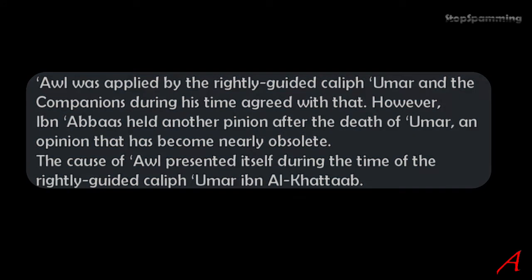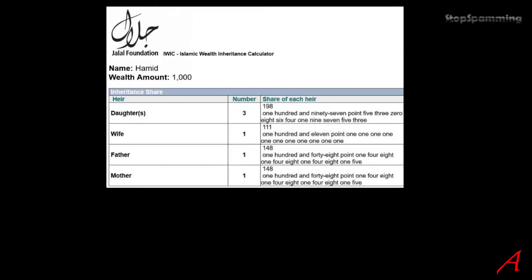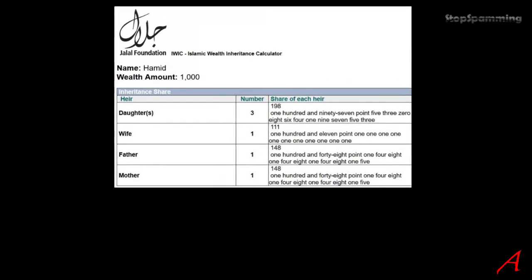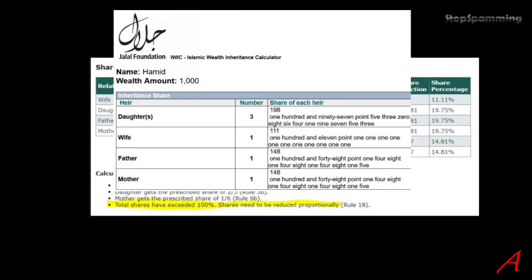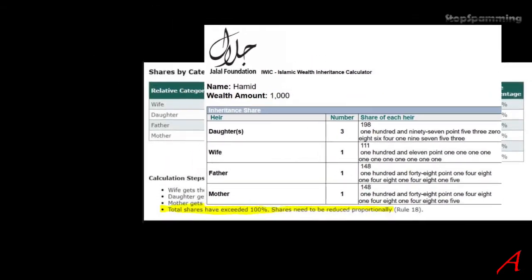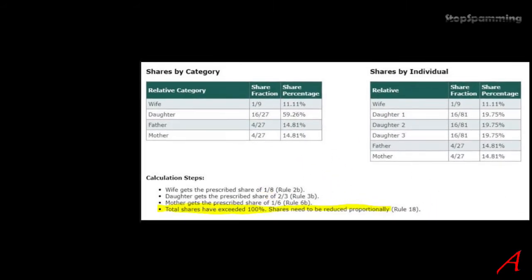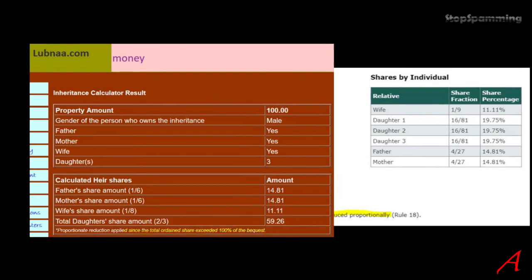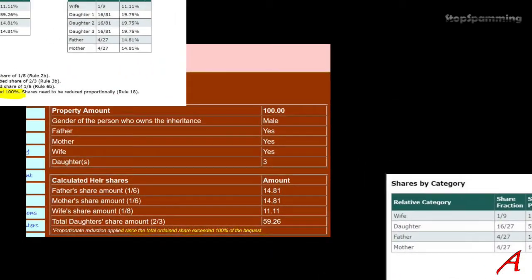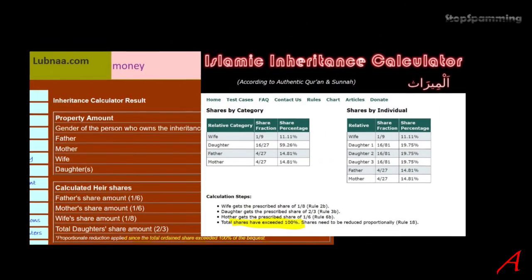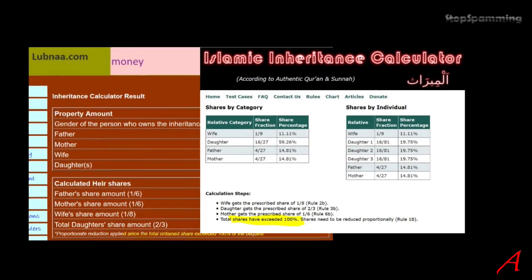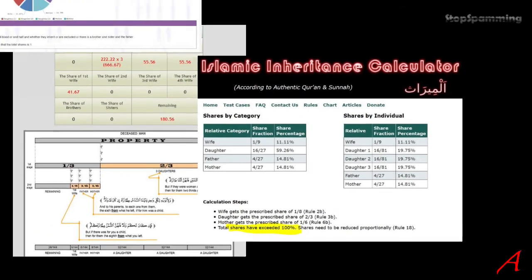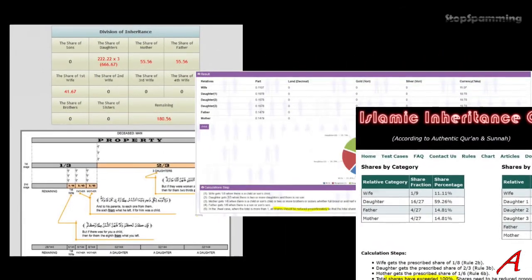But what happens when we use 21st century technology and enter the numbers of this particular scenario into an Islamic Sharia-compliant inheritance calculator — something Islamic scholars have developed? Something amazing happens. The calculators react differently, but always depending on rules defined by human beings, not a god. And they differ depending on what madhab — in other words, what sect or sub-sect — you select. The scholars, i.e. human beings, defined the Sharia and took the literal word of their god as only a mild suggestion, largely ignoring the instructions.